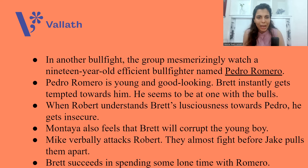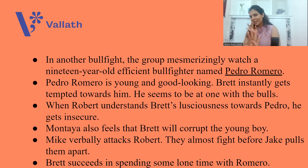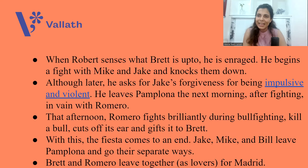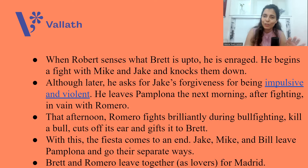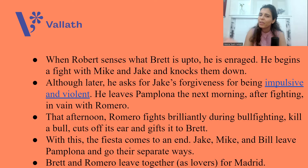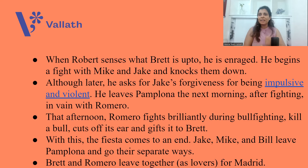Mike verbally attacks Robert. They almost fight before Jake pulls them apart. Brett succeeds in spending some lone romantic time with Pedro, and Pedro also likes it. When Robert senses what Brett is up to, he is enraged. At a party that night, he begins a fight with Mike, Jake, and even Bill — fighting with everyone. Although later in the hotel, he asks for Jake's forgiveness for being so impulsive and violent. The theme of impulsiveness and violence can be discussed here. Jake says he does not want to continue with them and wants to leave Pamplona. The next morning he does leave — but before leaving, Robert fights with Pedro Romero. Romero knocks Robert Cohn down, and Robert leaves the town.